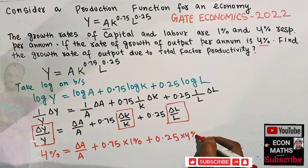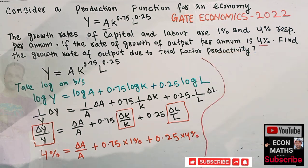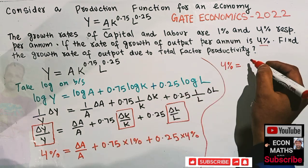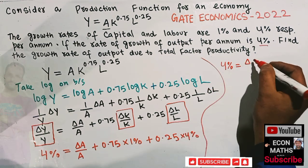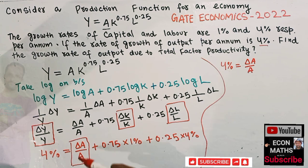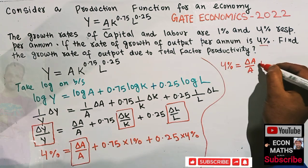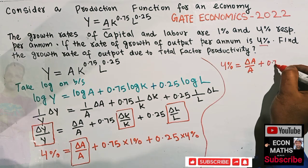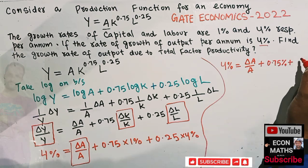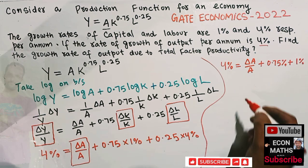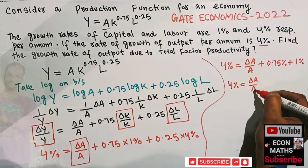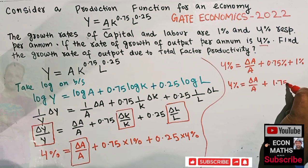The growth rate of labor is given as four percent. Solving: 4% = dA/A + 0.75 × 1% + 0.25 × 4%. This gives: 4% = dA/A + 0.75% + 1%. So: 4% = dA/A + 1.75%.